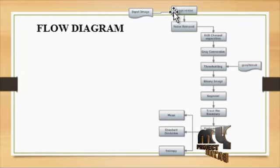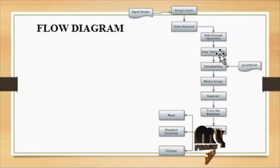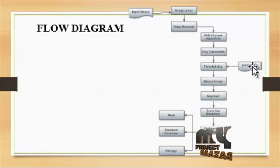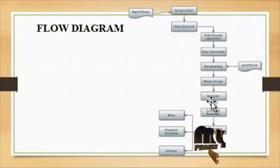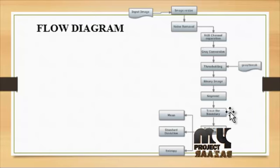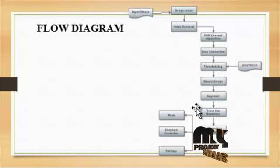Next is the flow diagram. First I get the input image, then noise removal, then RGB channel separation, then grayscale conversion, then converting to a binary image using the BW command, then segmenting the skin region. The segmented skin region is compared to the input image to find the traces of the affected area — BW trace boundary — then performance metrics are calculated, including the mean of the segmented image, the standard deviation of the segmented image, and the entropy of the segmentation.